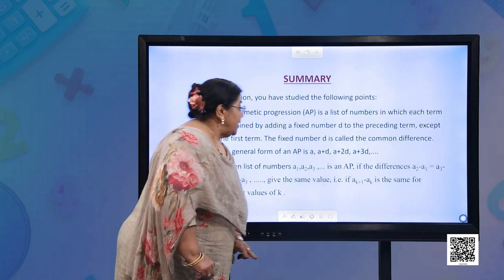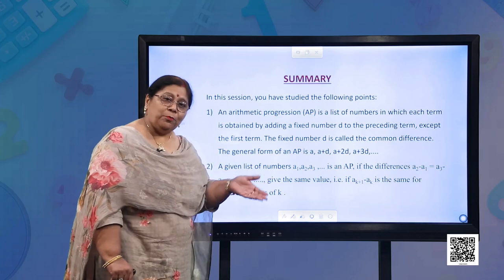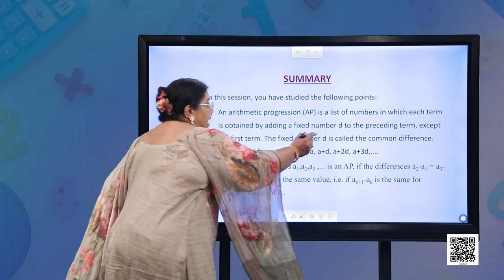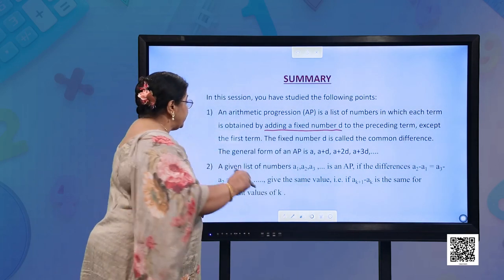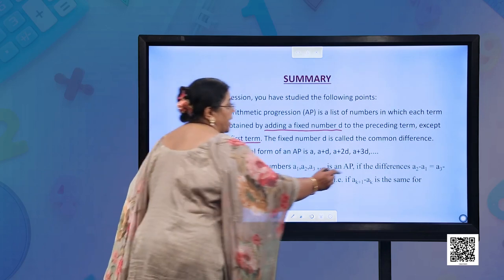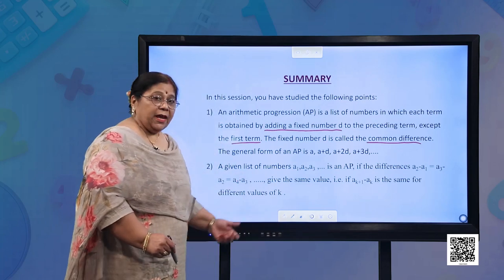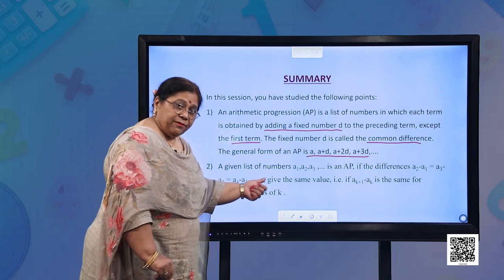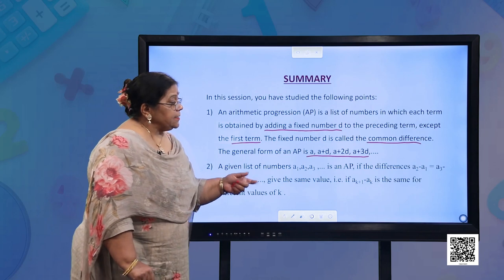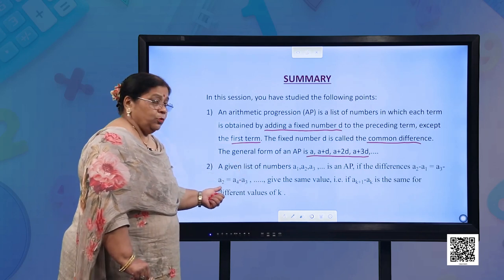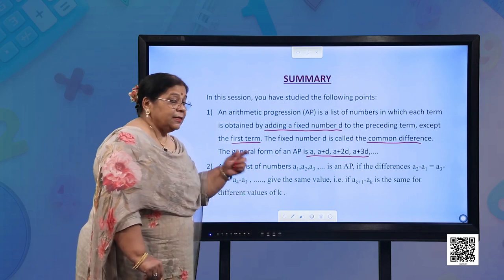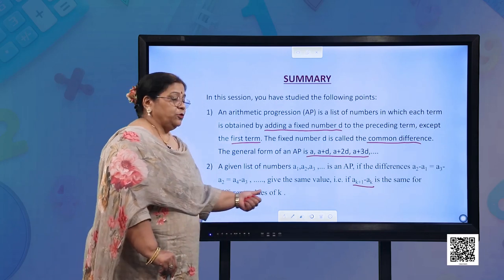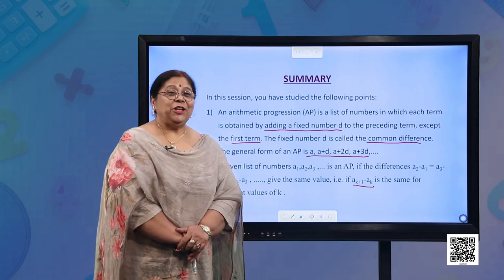Now let us summarize what we studied today. An arithmetic progression (AP) is a list of numbers in which each term is obtained by adding a fixed number D to the preceding term, except the first term. D is the common difference. The general form is: A, A+D, A+2D, A+3D, and so on. A list A1, A2, A3... is an AP if A2 − A1 = A3 − A2 = A4 − A3, giving the same value throughout.